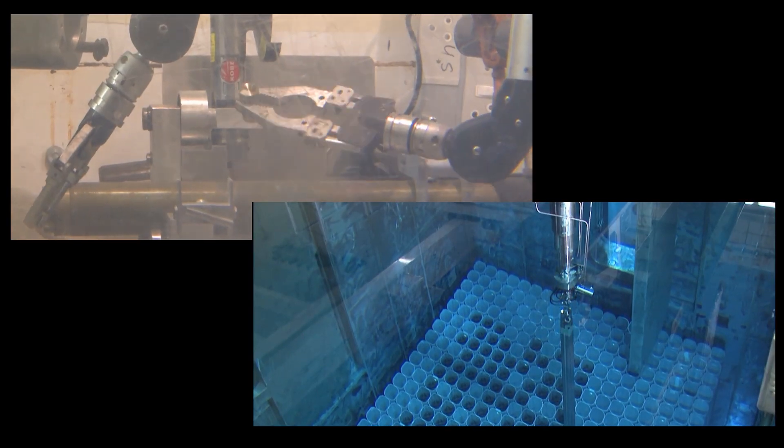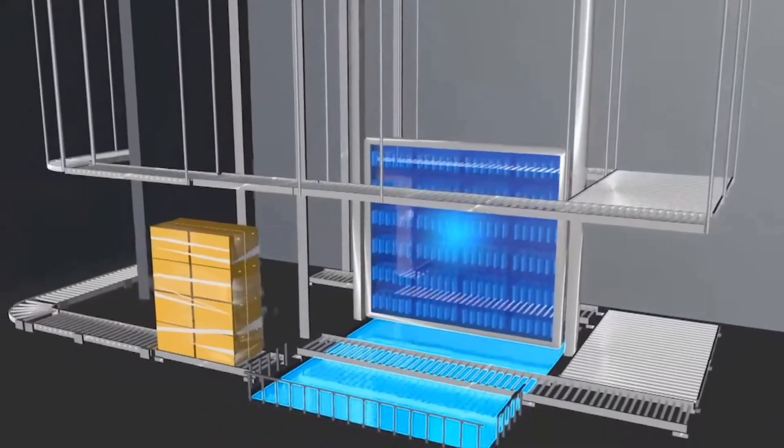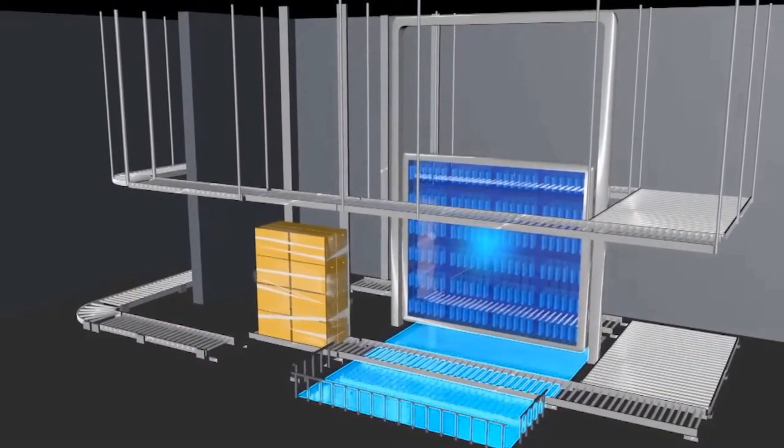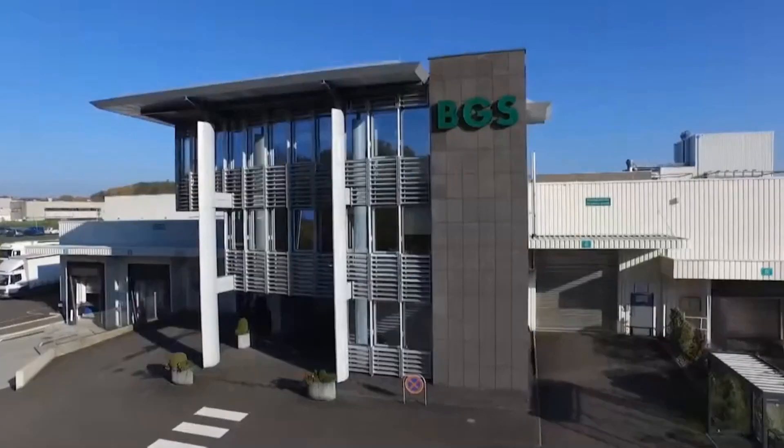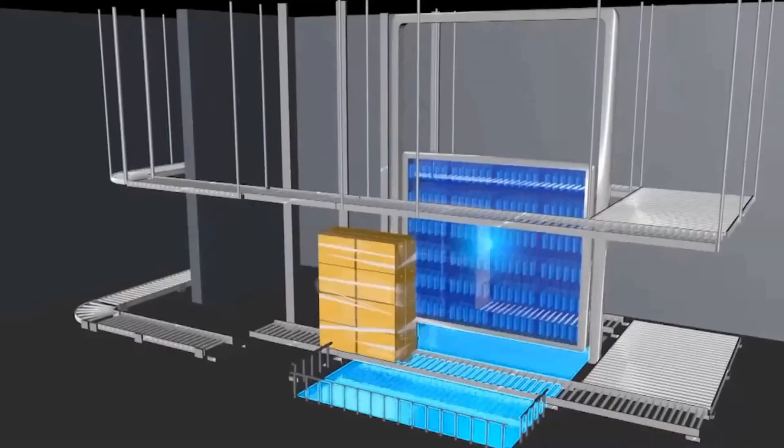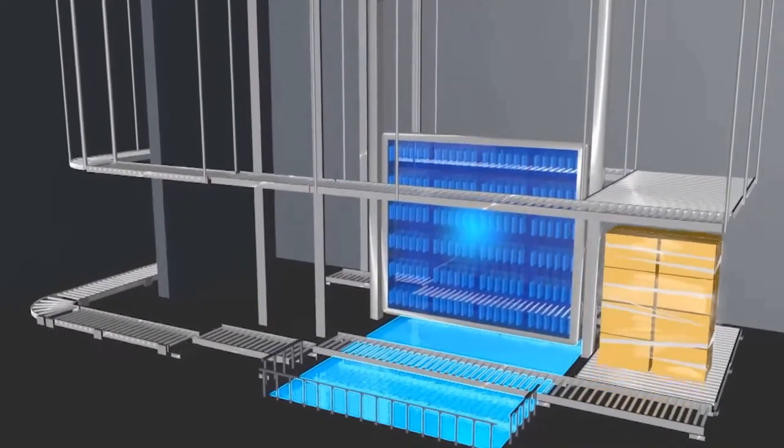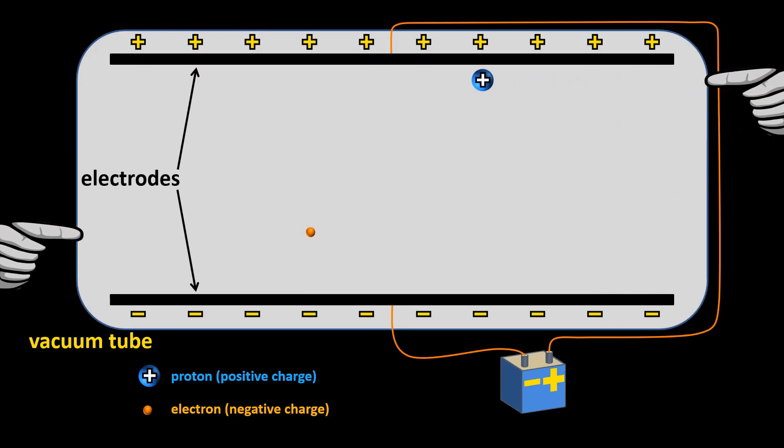The cobalt-60 atoms are then removed and transported to facilities around the world that need them. Like, for example, this plant that uses the gamma rays that cobalt-60 atoms produce to sterilize medical equipment.